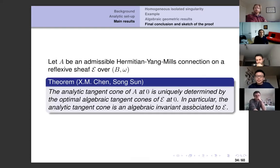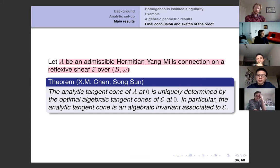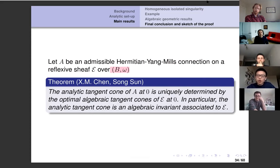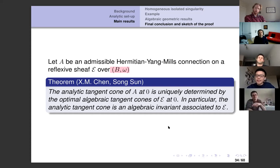Given this, we can state the final result. Suppose you have an admissible Hermitian-Yang-Mills connection on a reflexive sheaf E over the ball B. The conclusion is that the analytical tangent cone of A at the origin is uniquely determined by the optimal algebraic tangent cones of E at the origin, in exactly the same way as in the first theorem. In particular, the analytical tangent cone is an algebraic invariant associated to the sheaf E.